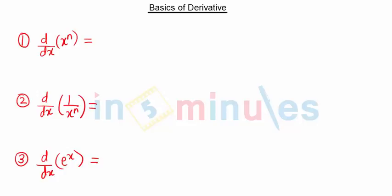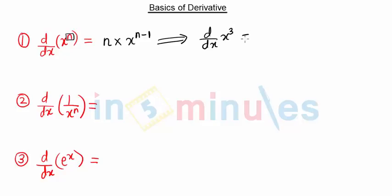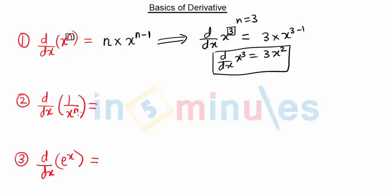To start with, we have to find the derivative of x raised to n. We know that n is some constant, so we multiply constant n with x raised to n minus 1. So this is the derivative of x raised to n. For example, the derivative of x raised to 3 — here n is 3 — so it is 3 into x raised to 3 minus 1, which is 3x squared.